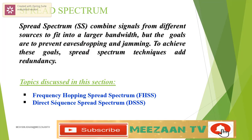Multiplexing combines signals from several sources to achieve bandwidth efficiency. The available bandwidth of a link is divided between the sources. In Spread Spectrum (SS), we also combine signals from different sources to fit into a larger bandwidth, but our goal is security. There are two types of spreading: one is Frequency Hopping Spread Spectrum known as FHSS, and the second is Direct Sequence Spread Spectrum known as DSSS.